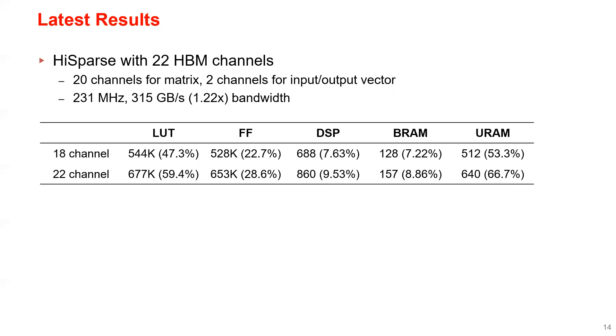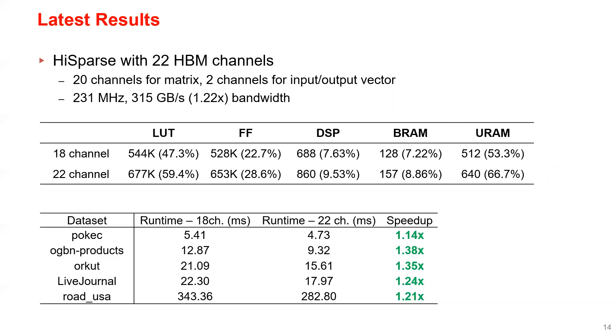And here is the comparison of the resource utilization. So with this 1.22x more bandwidth, we enjoy up to 1.38x speedup. So this speedup is more than 1.2 because the buffer size is also scaled up accordingly, as you can see in the resource utilization table.